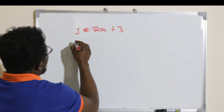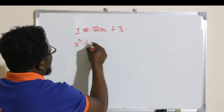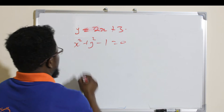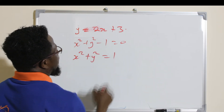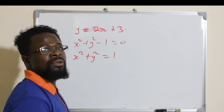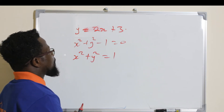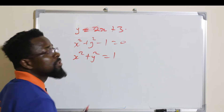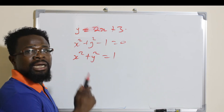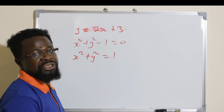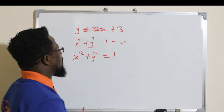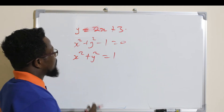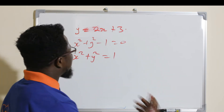But in a situation where we have something like the unit circle, x² + y² = 1 (which equals 0 when transposed), we can see that this cannot be differentiated explicitly. So we need to differentiate this by implicit differentiation, and that is what we are going to look at today.